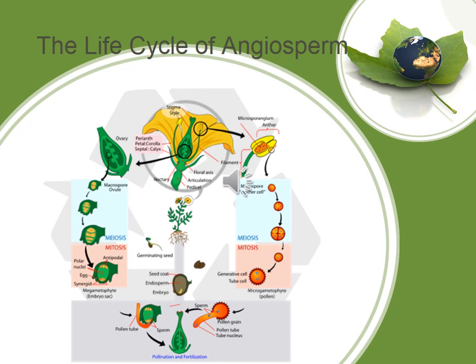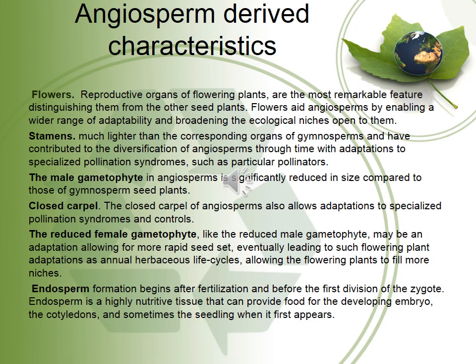This chart explains the life cycle of angiosperms. Angiosperm derived characteristics are flowers, stamens — the male gametophytes — the closed carpel, the reduced female gametophytes, and the endosperm. The flowers are the reproductive organs of flowering plants and are the most remarkable feature distinguishing them from other seed plants. Flowers aid angiosperms by enabling a wider range of adaptability and broadening the ecological niches open to them.